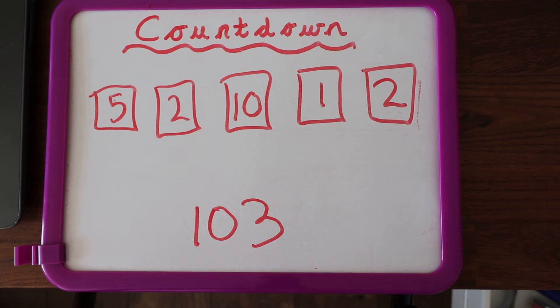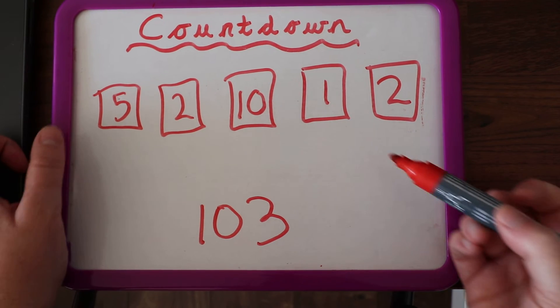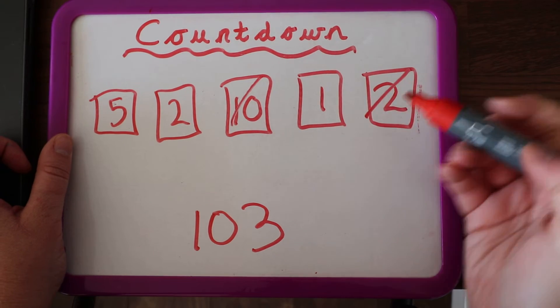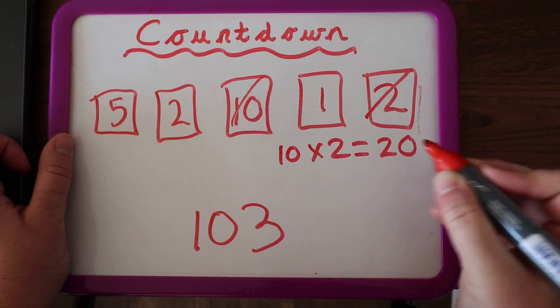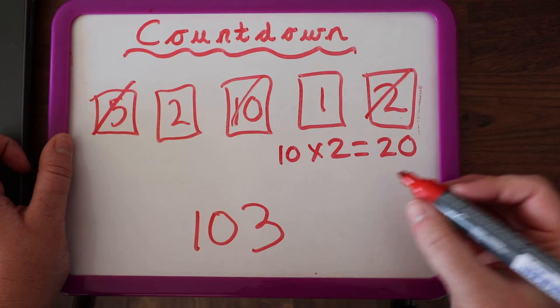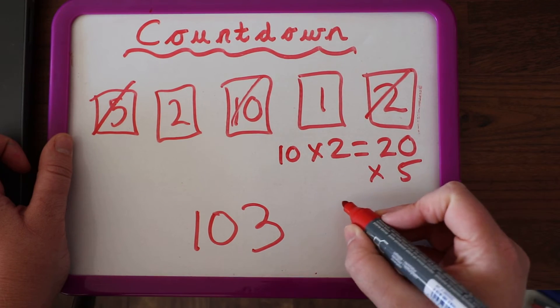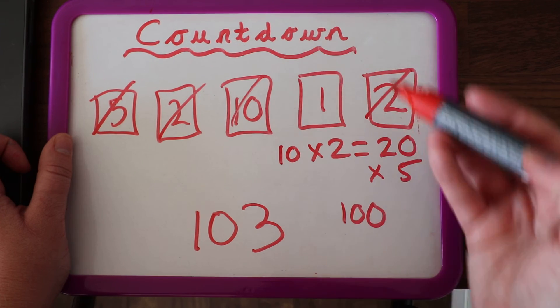Have you managed to do it? This is a tricky one, using some times and some groups. I'm going to do 10 times 2. 10 lots of 2 is 20. 20 times 5 is 100.